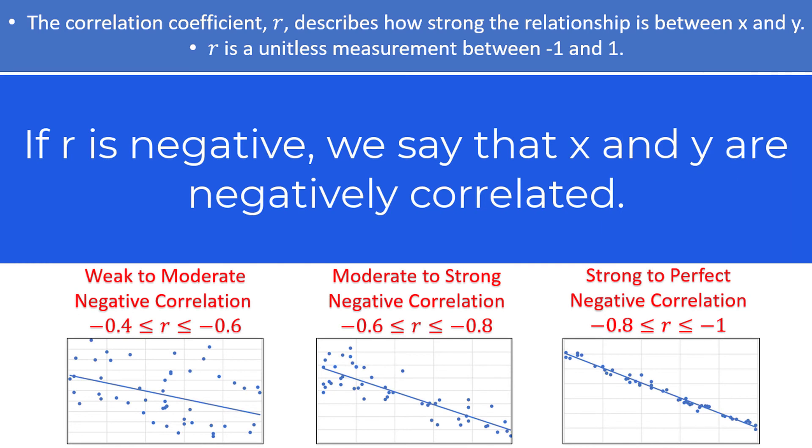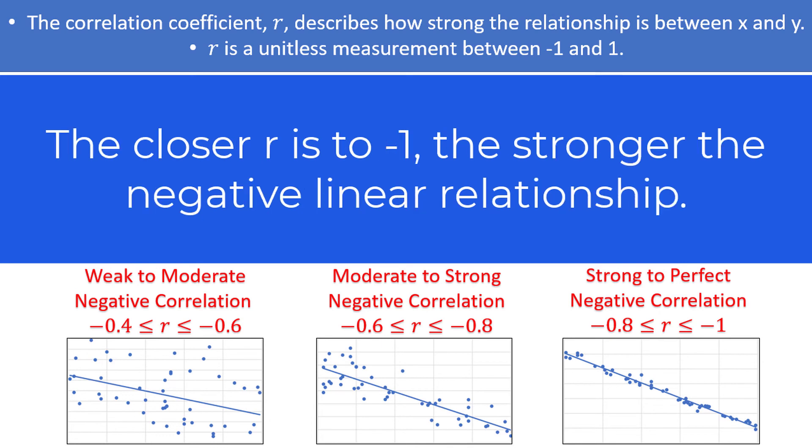If r is negative, we say that x and y are negatively correlated, and as x increases, y tends to decrease. As we get closer to negative 1, the negative relationship gets stronger, and the line will better fit the scatter plot.